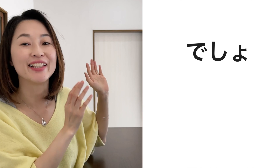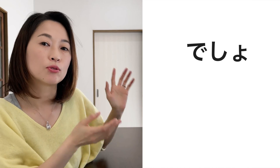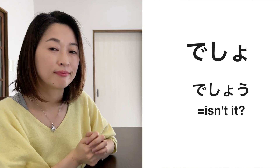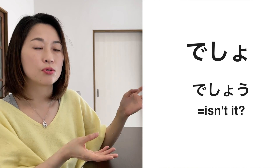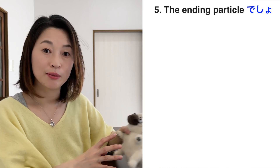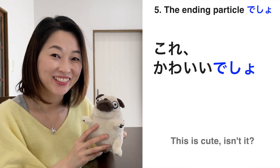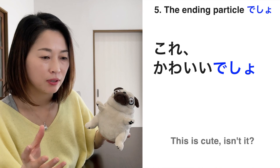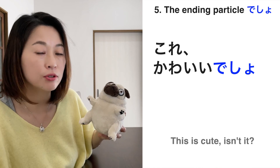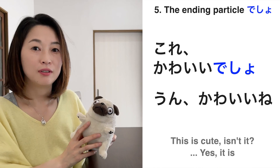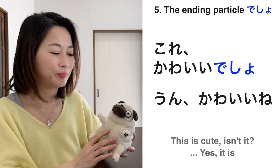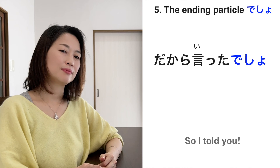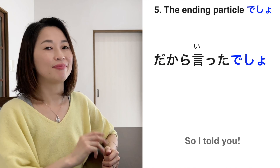The next one is desho. Desho is a casual contraction, and it's usually used by women. For example, kore kawaii desho? — you expect the other person to agree. You can say kore oishii desho? and dkara itta desho — meaning I told you so. Let's practice these.